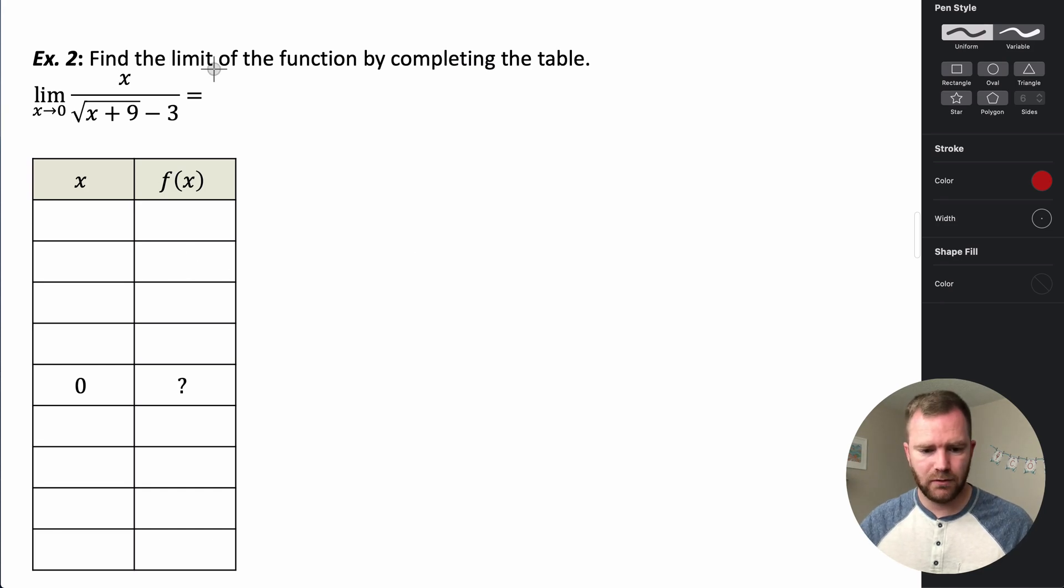So let's try this one. We want to find the limit of the function by completing this table. So it's the limit of x divided by the square root of the quantity x plus nine, all of that minus three, and the limit as x approaches zero.